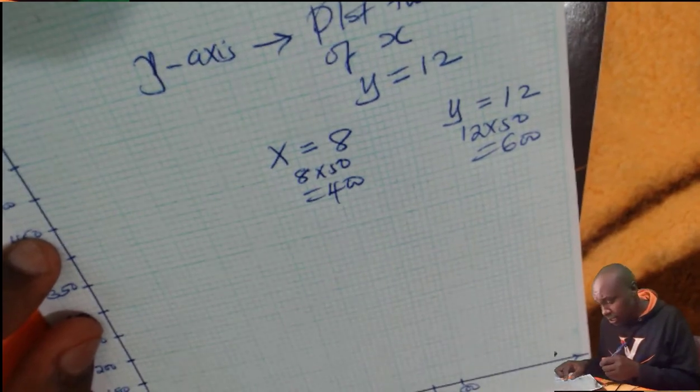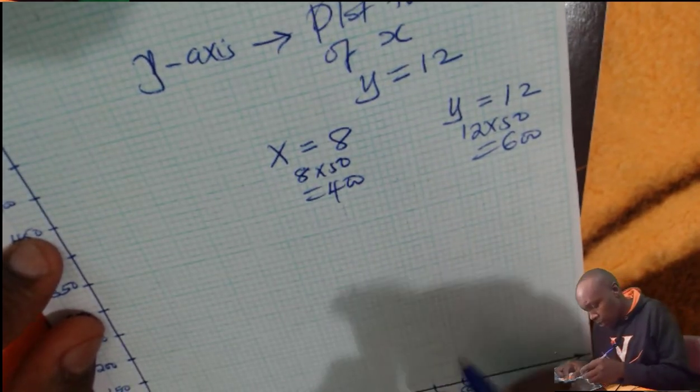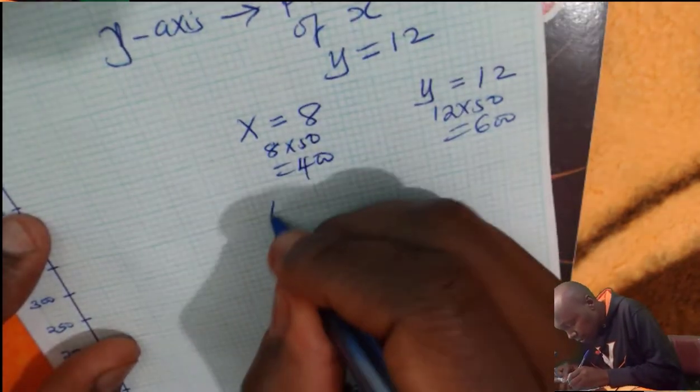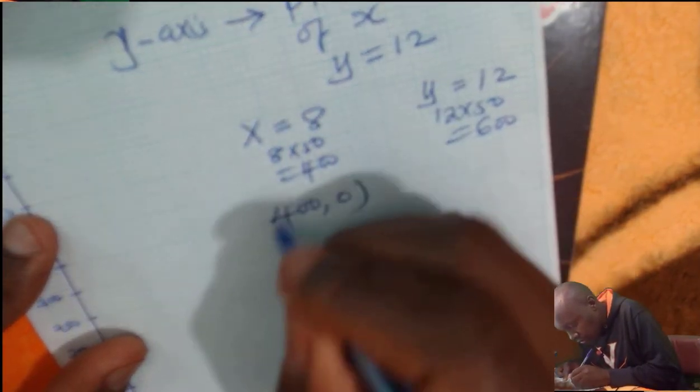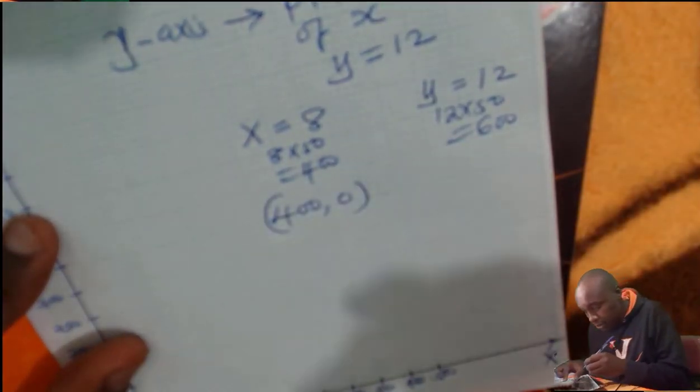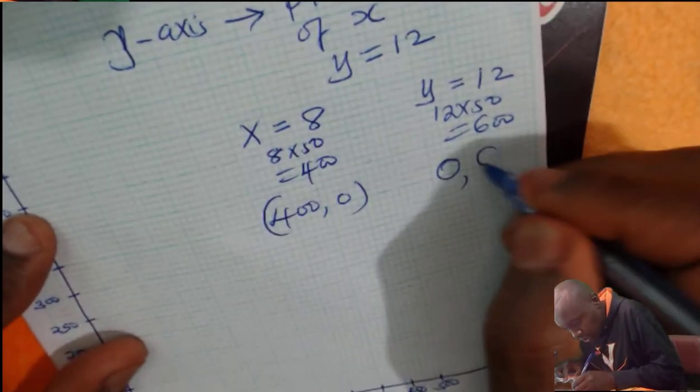Now, these are the coordinates that you should have now. So for the x-axis, you shall now plot 400, 0. And then for the y-axis, you shall plot 0, 600.